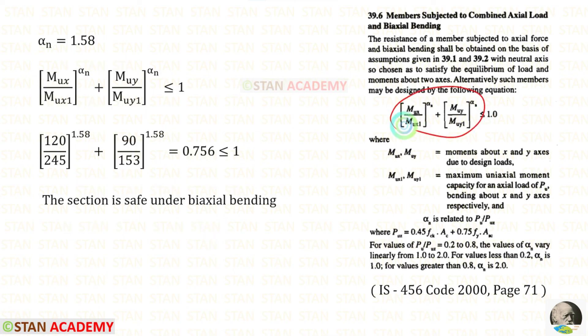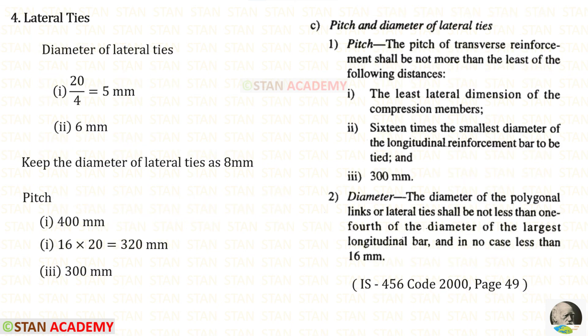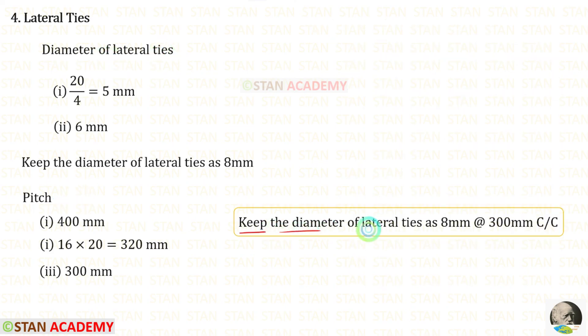Now, in this equation, we can apply all of the values. When we calculate, we will get 0.756 which is less than 1. So, the section is safe under biaxial bending. We know how to design the diameter of the lateral ties and its pitch. Let us keep the diameter of the lateral ties as 8 mm in the spacing of 300 mm.